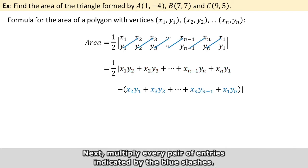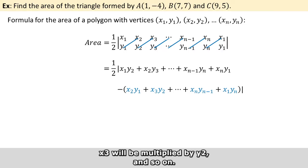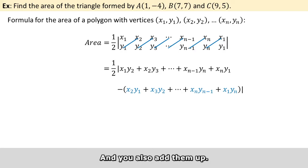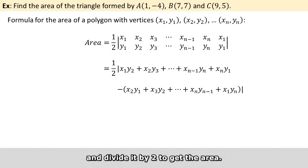And next, you multiply every pair of entries indicated by the blue slashes. So x2 will be multiplied by y1, x3 will be multiplied by y2, and so on. And you also add them up. Then you find the absolute difference between the two sums, and divide it by 2 to get the area.